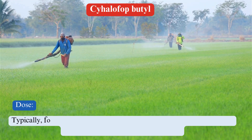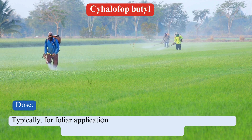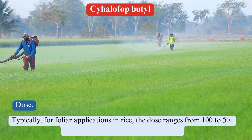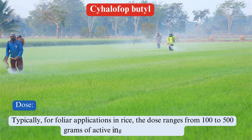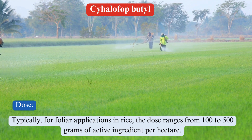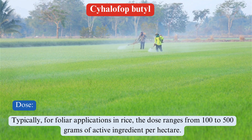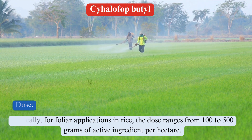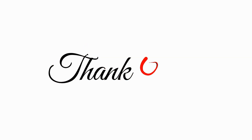Dose. The recommended dose of Cyhalophop butyl varies depending on the target weed species, crop, and local regulations. Typically, for foliar applications in rice, the dose ranges from 100 to 500 grams of active ingredient per hectare. Specific application rates and instructions are provided by the manufacturer and should be followed according to local agricultural guidelines.